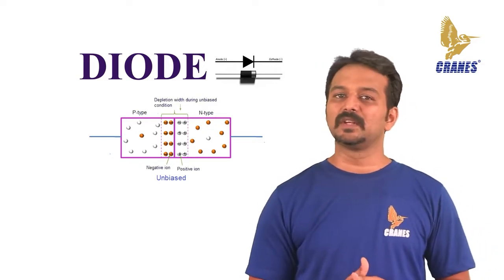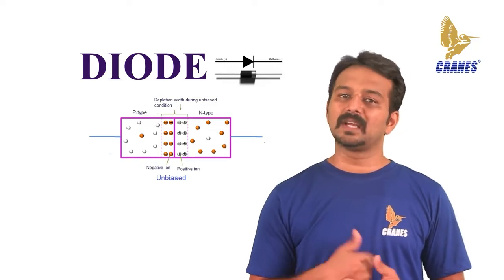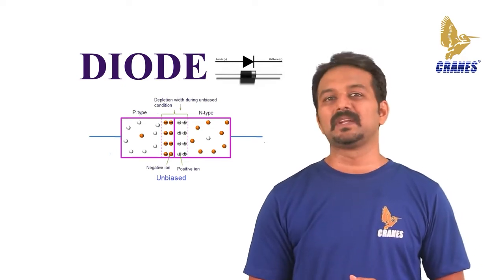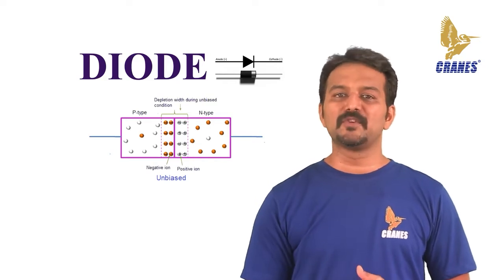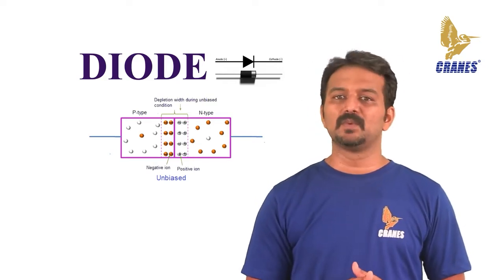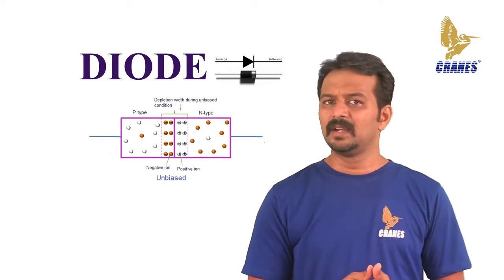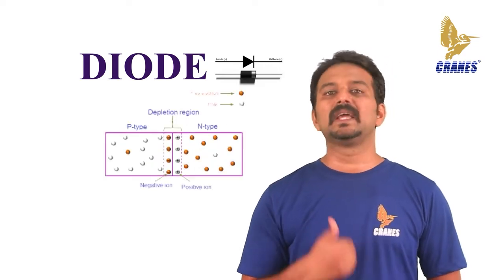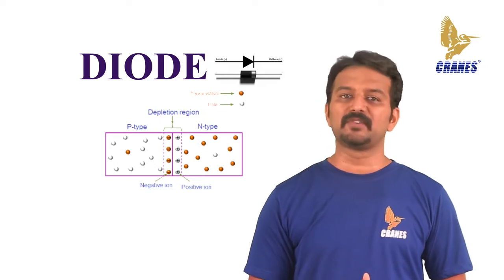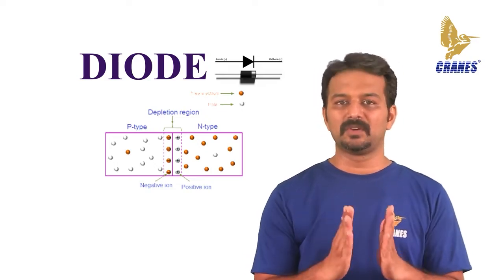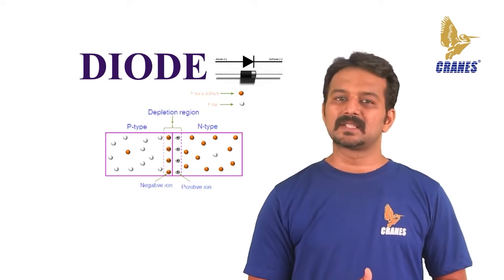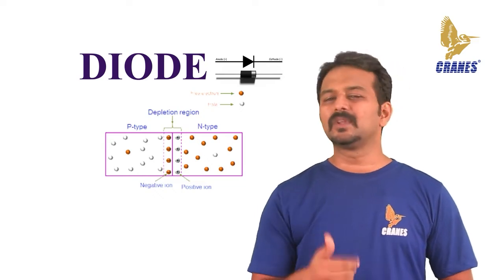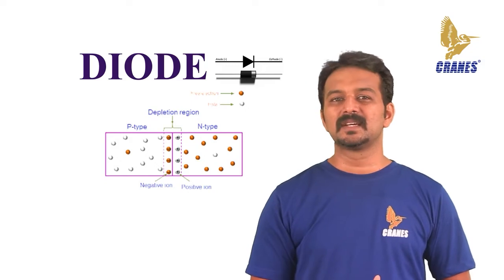The free electrons diffusing into the p-type region from the n-type region recombine with the holes available there and create uncovered negative ions in the p-type region. Similarly, the holes diffusing into the n-type region from the p-type region recombine with the free electrons there and create uncovered positive ions in the n-type region. The layers of uncovered positive and negative ions form a region at the middle of the diode where no charge carrier exists, since all charge carriers have recombined. Due to the lack of charge carriers, this region is called the depletion region.